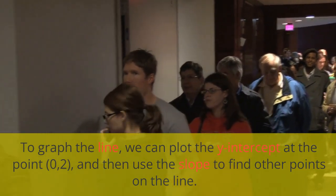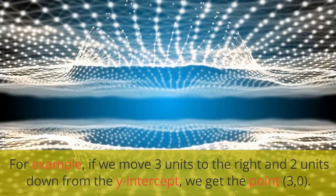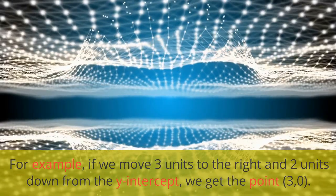Then use the slope to find other points on the line. For example, if we move three units to the right and two units down from the y-intercept, we get the point (3, 0).